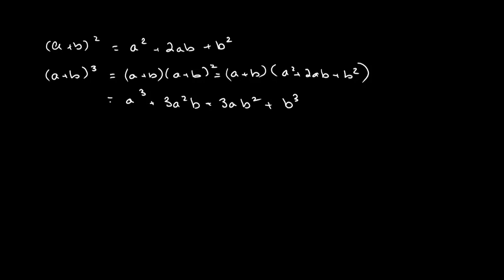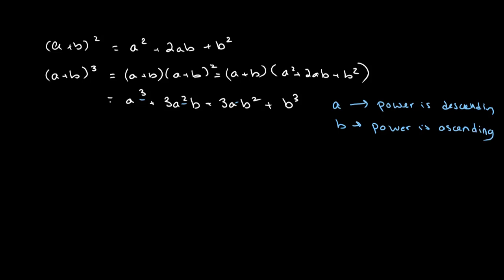One thing to note about this expression is that for a, the power is descending. So we started at a cubed, went to a squared, then a to the power of 1, then a to the power of 0. And in b, the power is ascending or going up — b, then b squared, then b cubed.